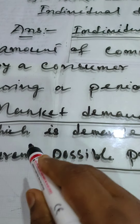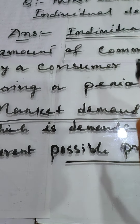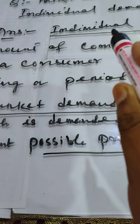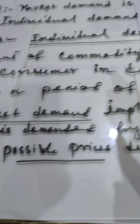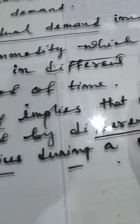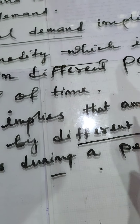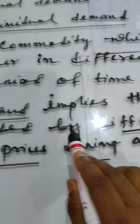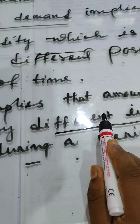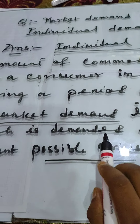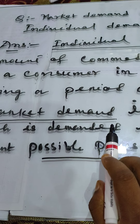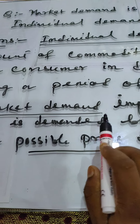From this discussion of the two definitions, it is clear that if we sum the individual demands, we can get market demand. In individual demand there is only one consumer, but in market demand the number of consumers is more than one — so market demand is the summation of individual demands. This topic can also be explained with the help of a table and diagram in the following way.